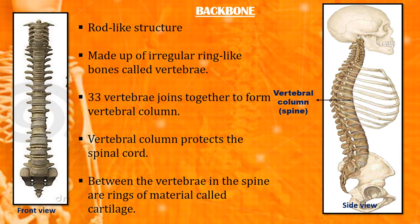These 33 small bones are irregular ring-like bones and they are called vertebrae. These 33 bones or vertebrae join together to make up the vertebral column or spine. A flexible rod called the spinal cord passes through these rings. Thus, the vertebral column protects the spinal cord.